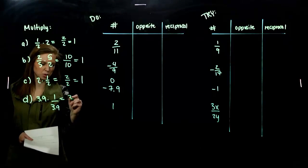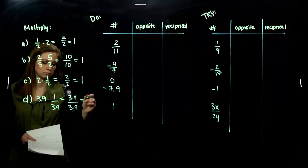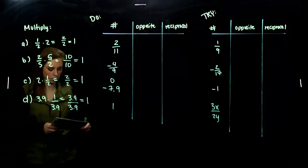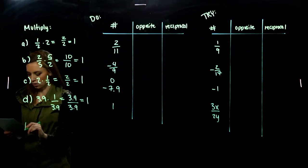Even if I have a decimal inside of a fraction, it's a funny feeling, but what is it equivalent to? 1. So, in each of these cases, their products are equal to 1.